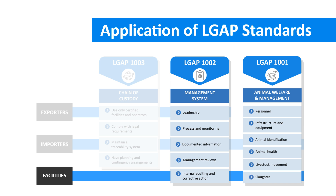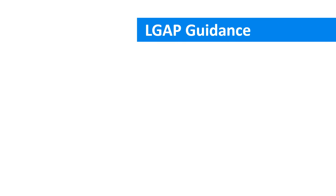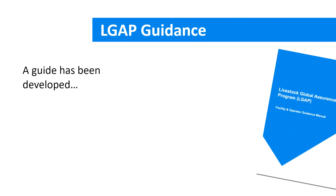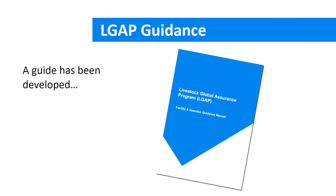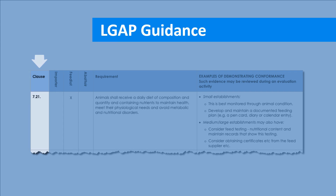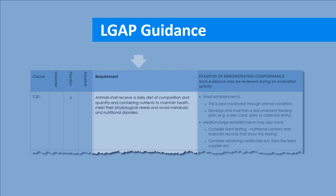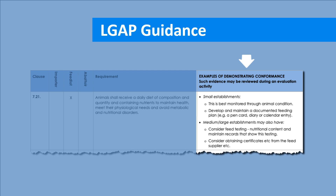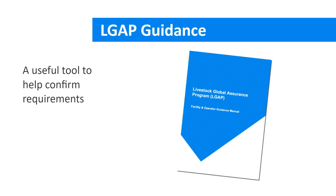Although, again, the specific requirements they must meet depends on whether they are a feedlot, farm or abattoir. To make it easier for operators and facilities to identify and demonstrate meeting the requirements, a guide has been developed. This guide covers each requirement in the three standards and identifies the unique requirement number, who the requirement applies to, the wording of the requirement as it appears in the standard, and examples of evidence that may be used to demonstrate conformance. It's important to understand these are only examples. Operators or facilities may do some of these things, or they may do none of them, because they can demonstrate conformance in another way. Access this guide to confirm the requirements that apply to you and how you can show they are being met.